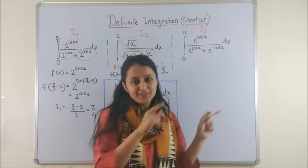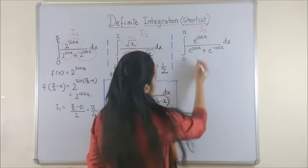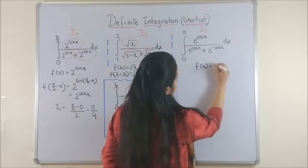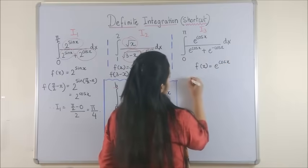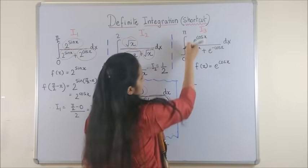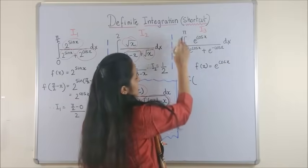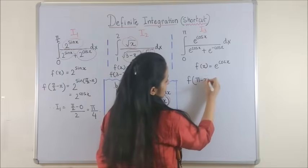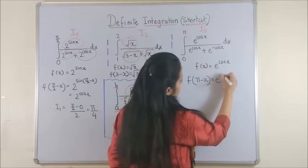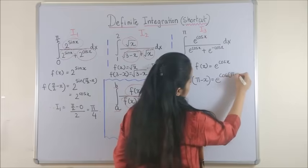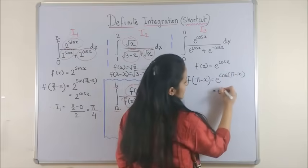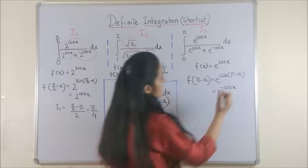By now, I am sure you would have started doing this one on your own. So here, my function is e to the power cos x. Now, f of a plus b minus x means pi minus x, which is e raised to the power cos of pi minus x. Now, being in the second quadrant, this gives us e to the power minus cos x.